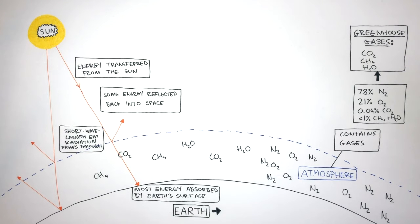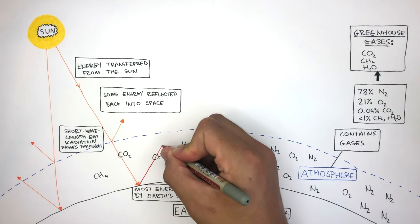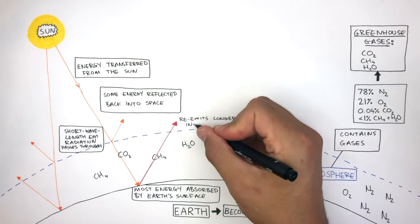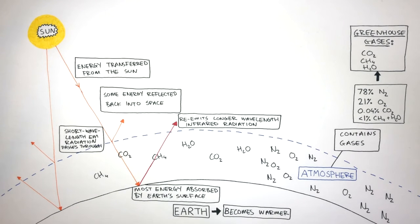Because short wavelength electromagnetic radiation has been absorbed by the Earth's surface, this causes the Earth's surface to become warmer. The Earth's surface cools down by re-emitting longer wavelength infrared radiation back into the atmosphere, where some of this escapes into space. However, the greenhouse gases are very good at absorbing this longer wavelength infrared radiation. Oxygen and nitrogen are not good at doing this. The greenhouse gases absorb this longer wavelength infrared radiation, causing the molecules to vibrate more.